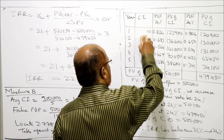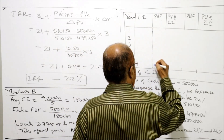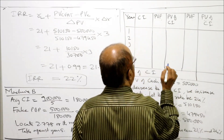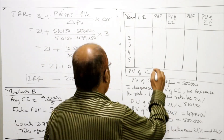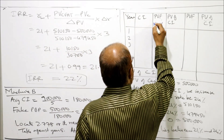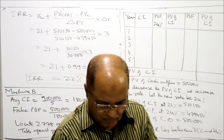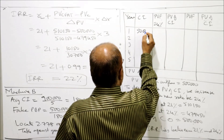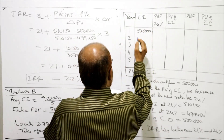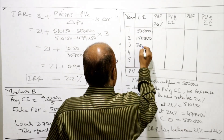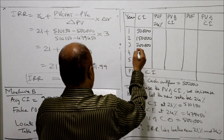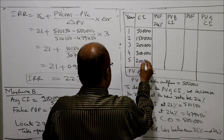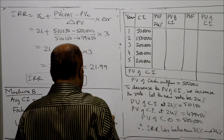At 24% we prepare the same table for machine B. PV factors at 24% are 0.806, 0.650, 0.524, 0.423, 0.341. Machine B cash inflows are: fifty thousand, one lakh fifty thousand, two lakh, three lakh, and two lakh. We multiply the PV factors with these cash inflows to find PV of cash inflow.